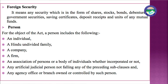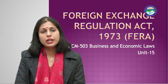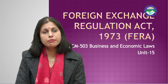Next is the term 'person.' In the definition of person, it includes: individual, Hindu Undivided Family, company, firm, an association of persons or body of individuals whether incorporated or not, any artificial juridical person not falling under any of the preceding sub-clauses, and any agency, office, or branch owned or controlled by such person.